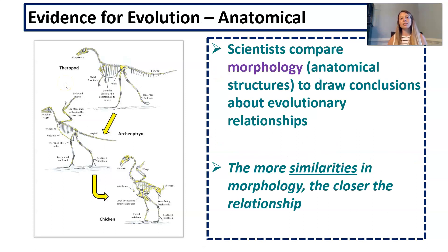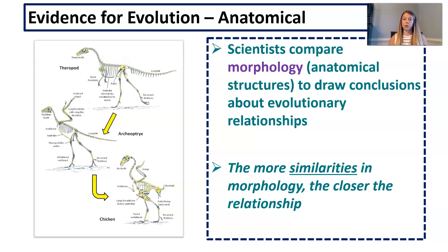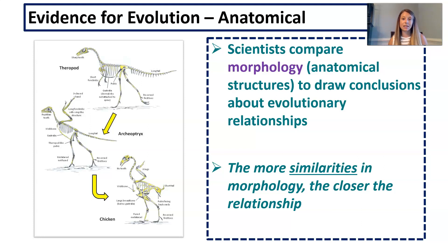Moving on to our second piece of evidence: anatomical structures. Scientists compare morphology — anatomical structures — to draw conclusions about evolutionary relationships. It's simple: the more similarities you have in morphology and structure, the closer the relationship. This is why we think chickens and other birds are more closely related to reptiles than to anything else, because their morphology is very similar.